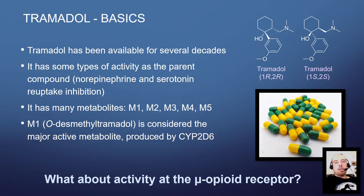Generically, metabolites are listed as M1 to M5. However, M1, which is O-desmethyltramadol, is considered to be the major active metabolite, produced by a very important enzyme called cytochrome P450-2D6. There is some evidence that mutations in that enzyme do matter — they affect the amount of metabolite produced and the activity of tramadol. Drug interactions are also pertinent on that enzyme. I'm not going to focus on that because the focus of this discussion is really on the pharmacodynamics, or receptor binding.